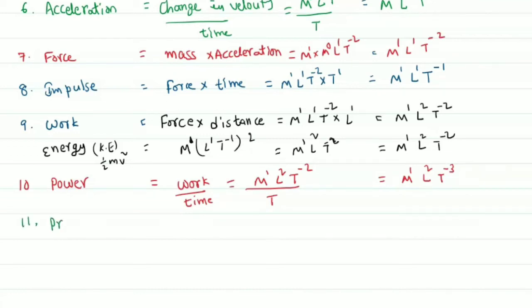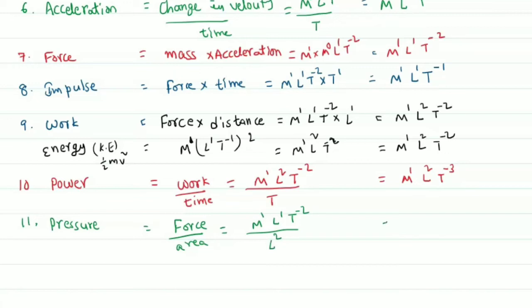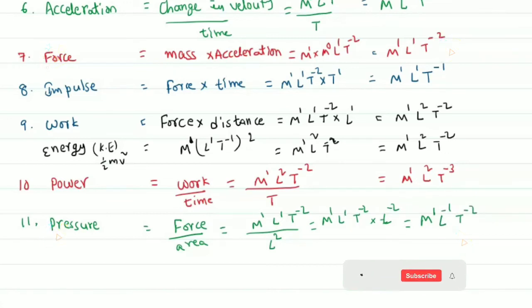Next is pressure. Pressure is force applied per unit area. Force gives M power 1, L power 1, T power minus 2. Area gives L power 2. Dividing, we get M power 1, L power minus 1, T power minus 2.